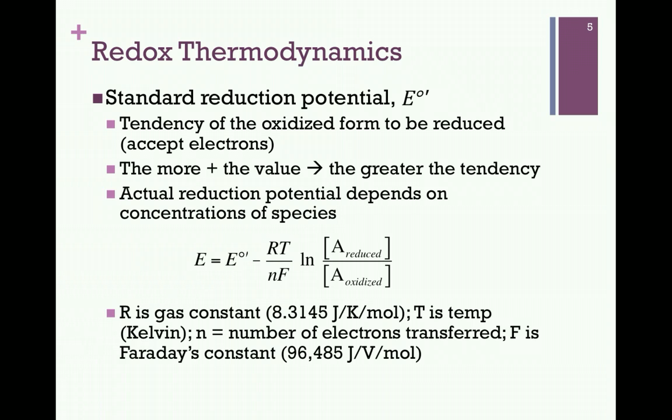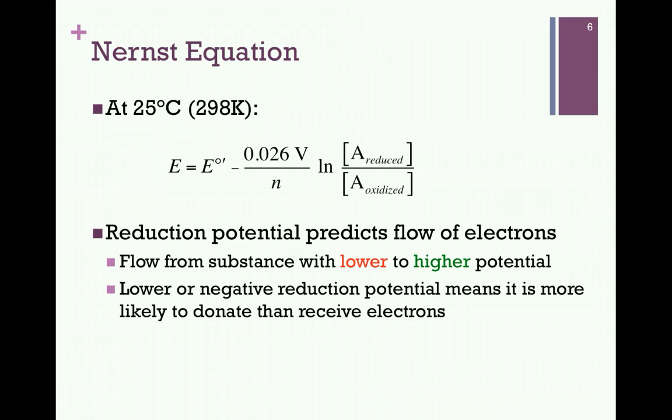In our expression, R is the gas constant, T is the temperature in Kelvin, N is the number of electrons transferred, and F is Faraday's constant. The expression can be simplified in cases where the reaction is performed at 25 degrees Celsius, and by including the values of our constants, as shown in our expression here.